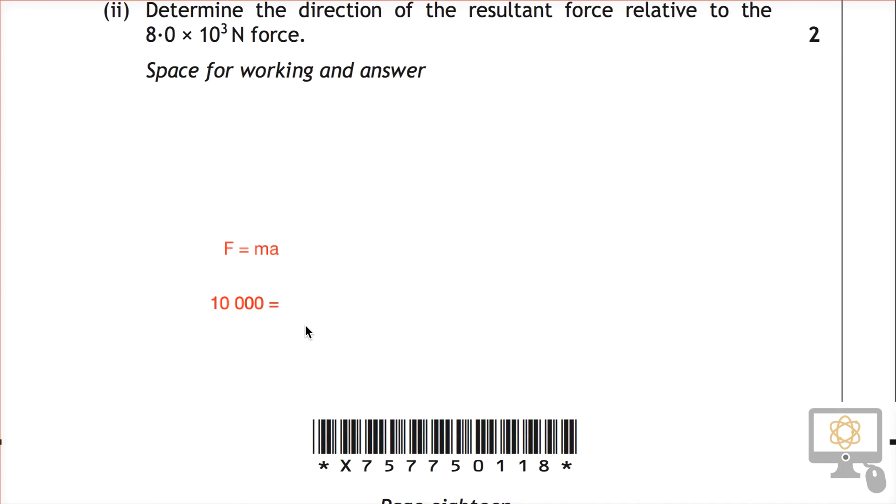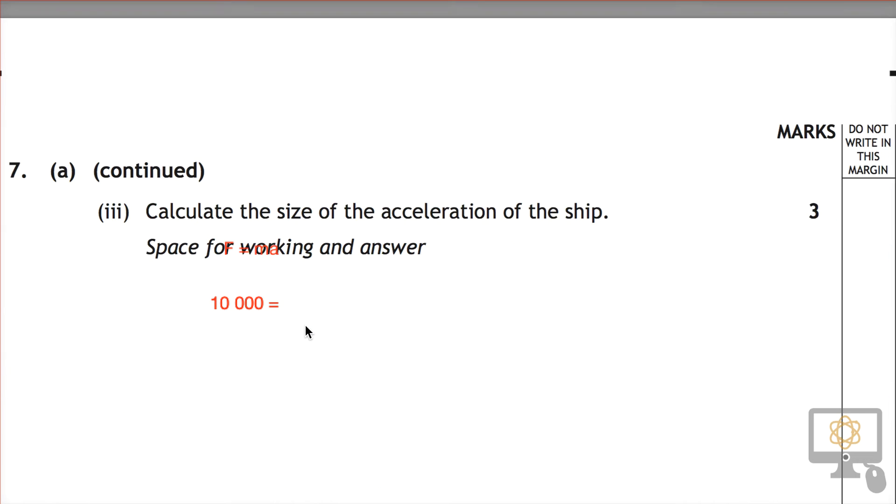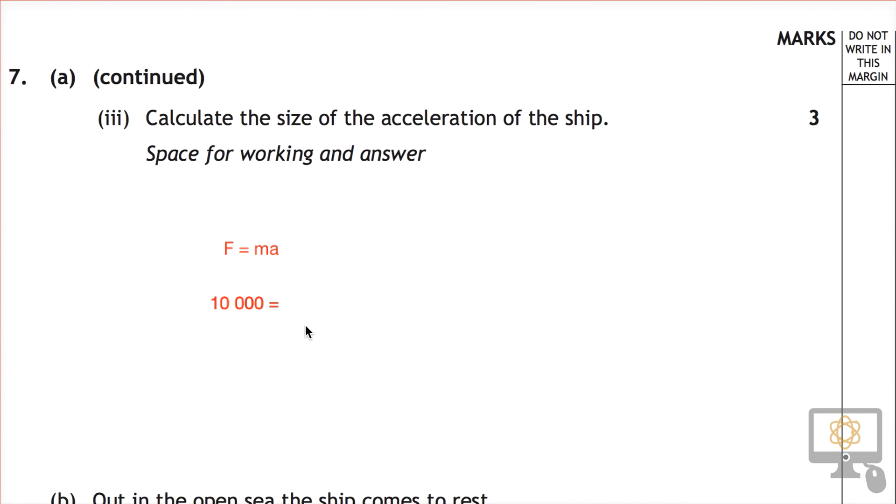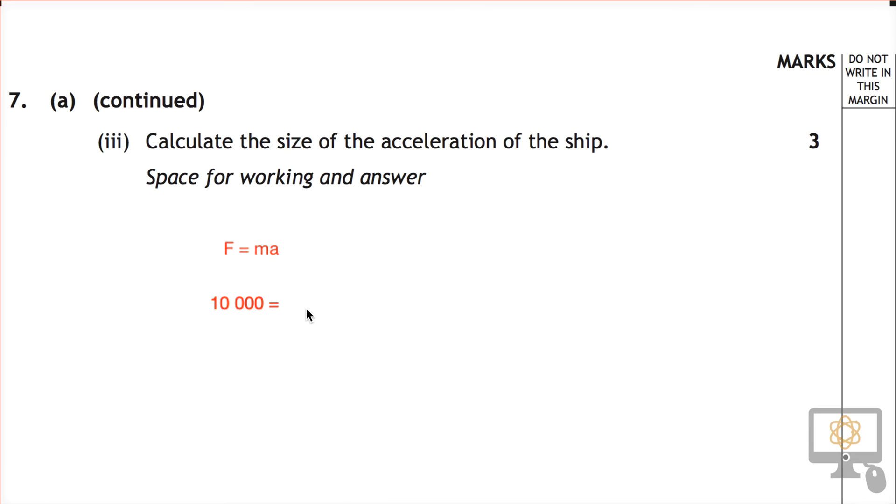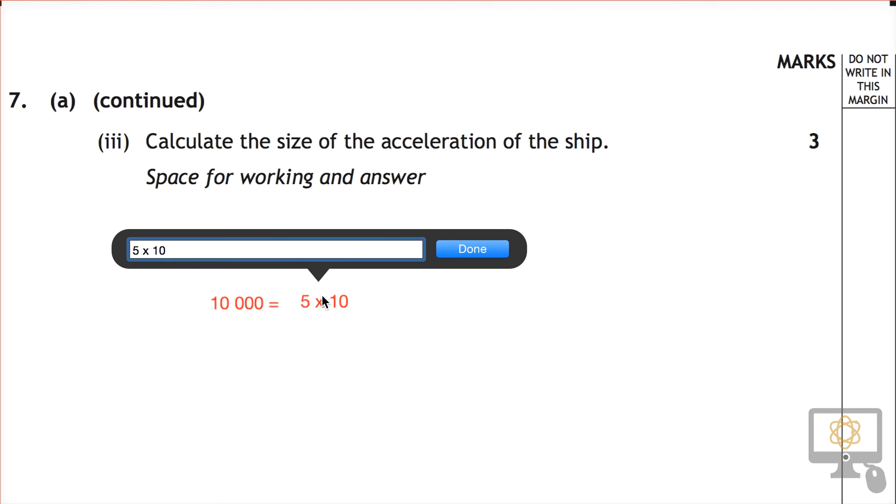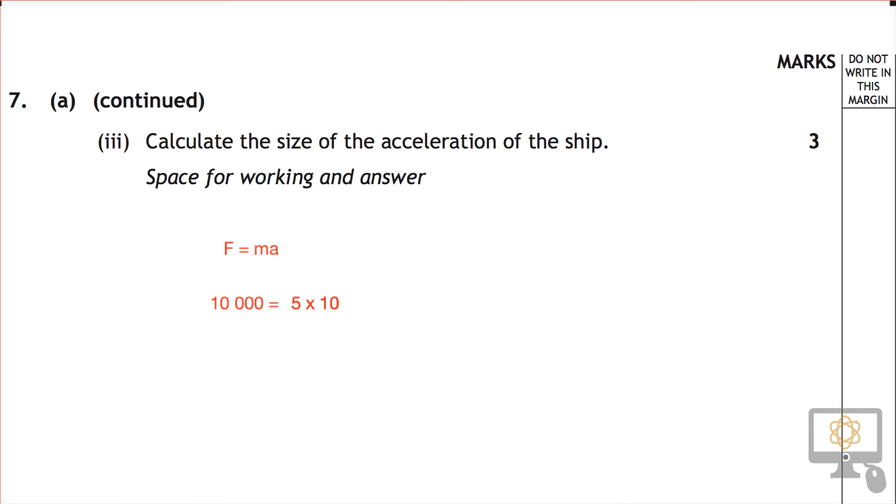So we can add that in to our solution down here. Let's carry on where we left off. 5 times 10 to the power of 6. And that's the mass of the ship. And then we multiply that by the acceleration. So that's our formula.